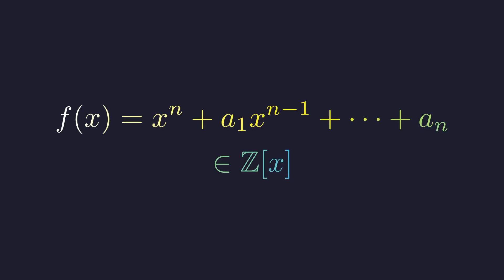Let's start with a polynomial f of x, where all the coefficients are integers, and the highest degree term has coefficient 1. This is what we call a monic polynomial.